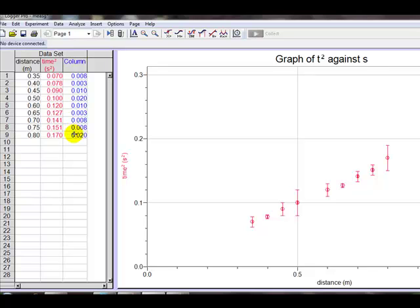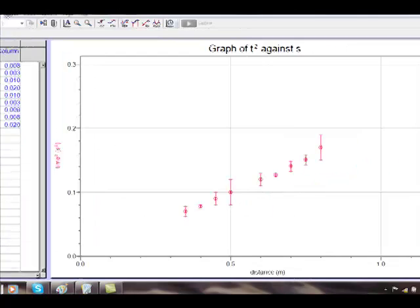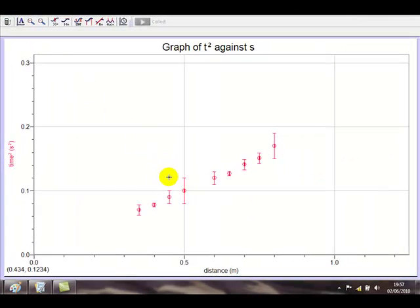The third column is the uncertainty in the time squared, which has already been processed. On the graph you can see the error bars and the points.